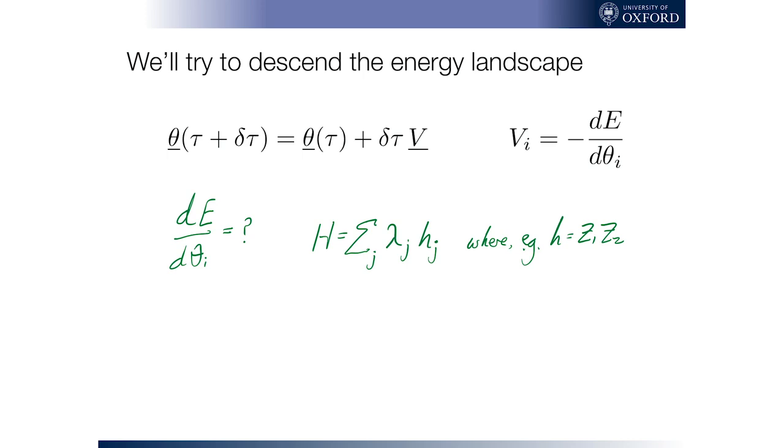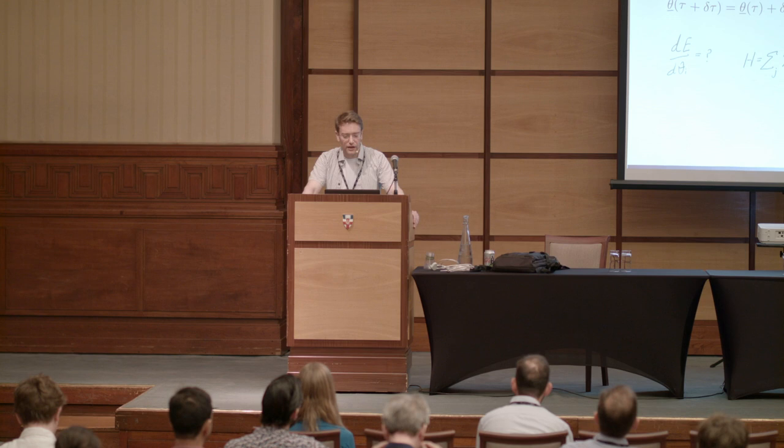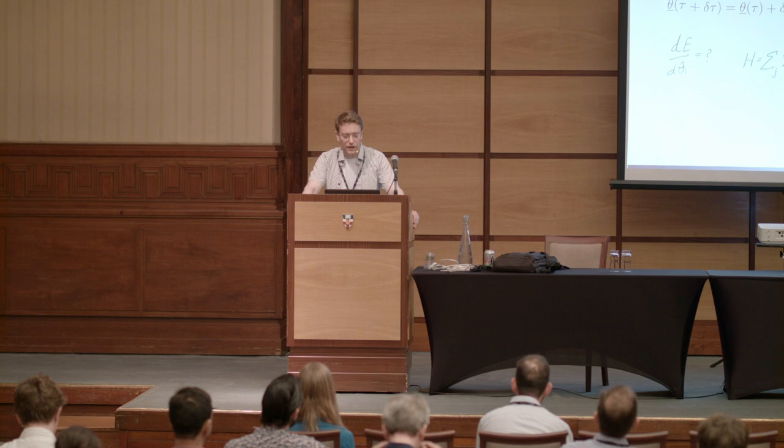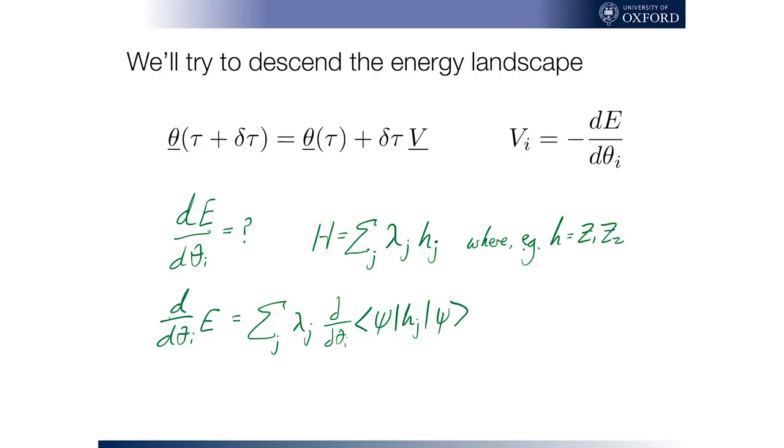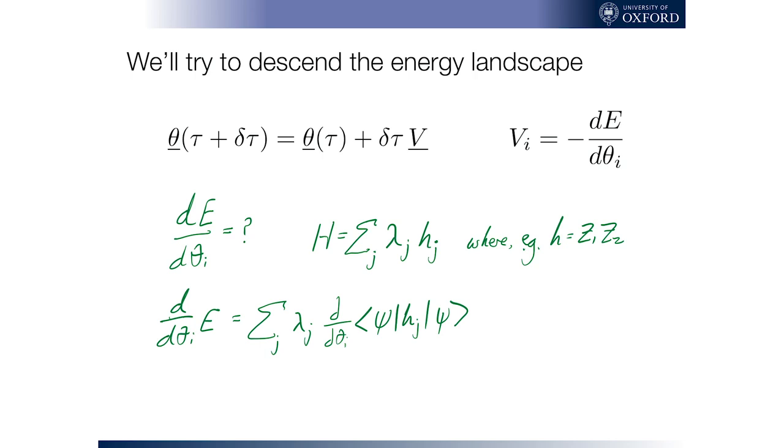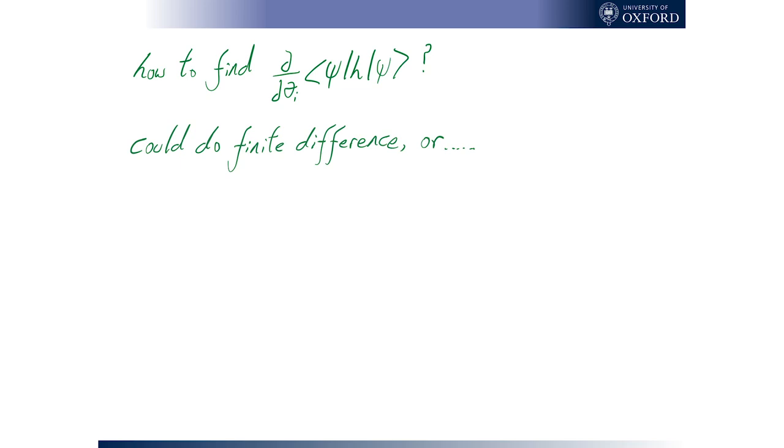So we want to find this derivative. The first thing to say is that we assume the Hamiltonian is a sum, not exponentially large sum of individual terms, and each term is just a product of Pauli operators. So for our toy model, an example term might be Z1, Z2. So then the question of how to find this gradient becomes just the question of how are we going to find the gradient of the expectation value of one of these simple operator combos.